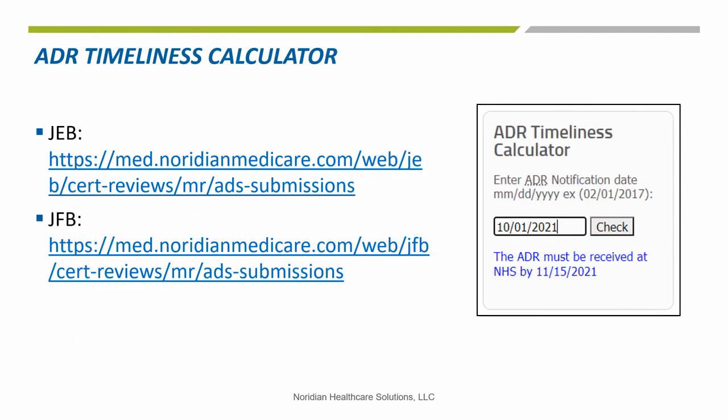Included here is a snapshot of a handy tool available on the Medical Review webpage: the ADR Timeliness Calculator. In this example, we use the date of 10-1-2021. Click Check and the ADR receive date is displayed. With an ADR notification date of 10-1-2021, the ADR must be received by November 15, 2021.